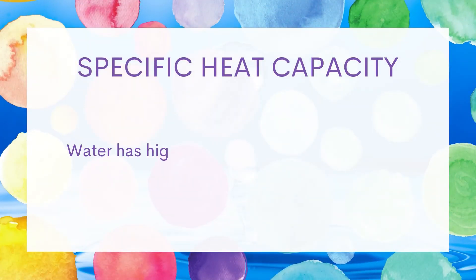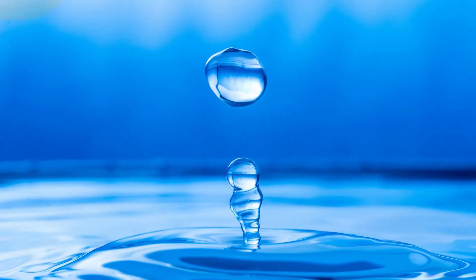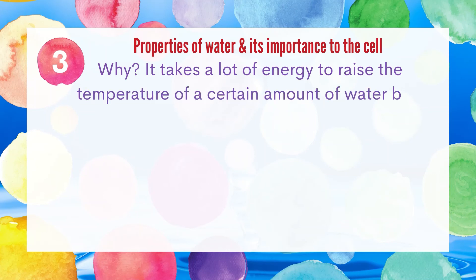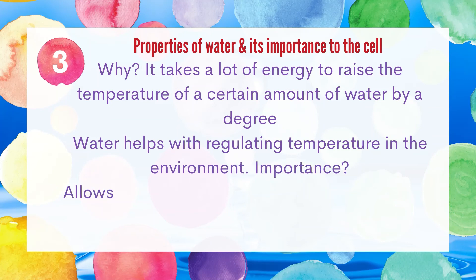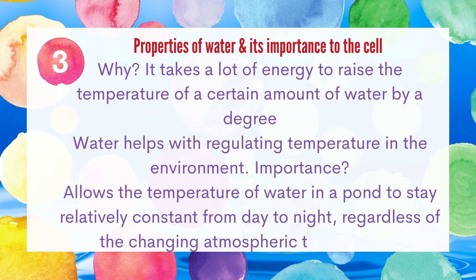The next property of water is specific heat capacity. Water has a high specific heat capacity of 4.2 kilojoules per kilogram per degree Celsius. This means it takes a lot of energy to raise the temperature of a certain amount of water by one degree. Due to that, water helps to regulate temperature in the environment, allowing the temperature of water in a pond to stay relatively constant from day to night, regardless of the changing atmospheric temperature.